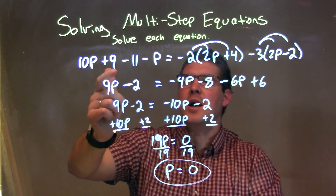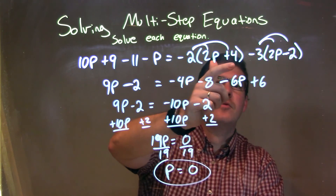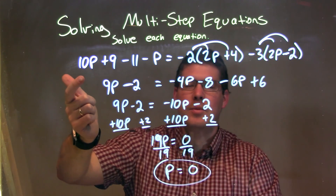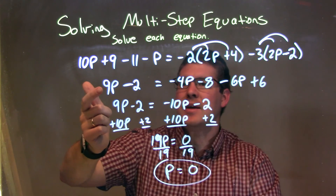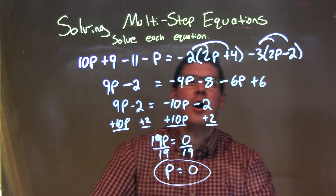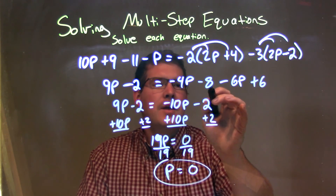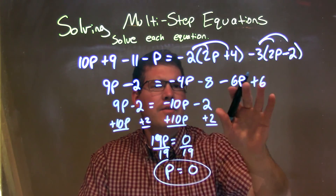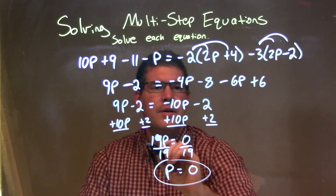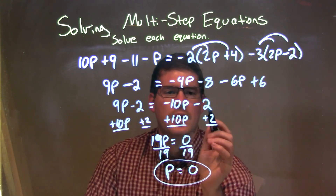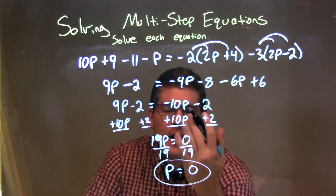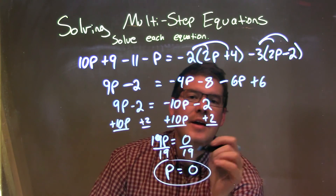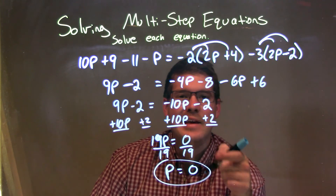Let's recap. We were given 10p plus 9 minus 11 minus p equals negative 2 times 2p plus 4, minus 3 times 2p minus 2. On the left side, I simplified by putting variables and numbers together to get 9p minus 2. On the right-hand side, I distributed both parentheses to get minus 4p minus 8 minus 6p plus 6 — make sure you distribute that minus sign across to both parts. I then simplified the right-hand side: negative 4p and negative 6p give negative 10p, and negative 8 plus 6 is minus 2. From there, I brought all variables to the left and numbers to the right, leaving 19p equals 0. Dividing by 19 on both sides gives p by itself, and our final answer is p equals 0.